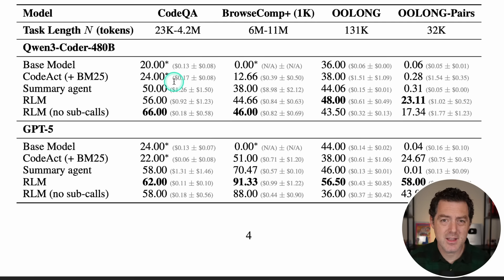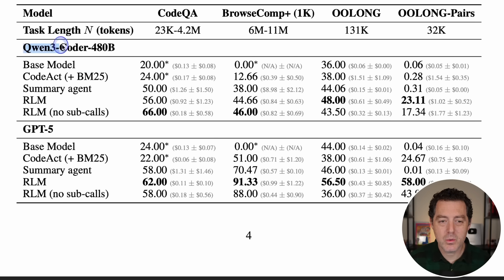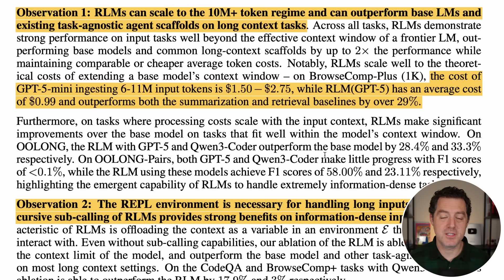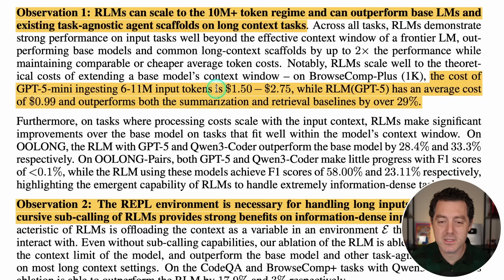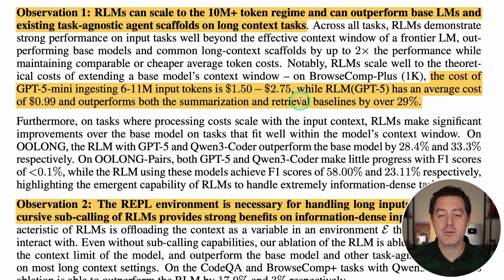Looking at the results — needle in the haystack was left off because it's basically solved. On CodeQA, BrowseComp, Oolong, and Oolong Pairs, RLM — even RLM with no subcalls — did way better than other methods. Observation one: RLMs can scale to the 10 million+ token regime and outperform base models and existing agent scaffolds on long context tasks. The cost of GPT-5 Mini ingesting 6 to 11 million input tokens is $1.50 to $2.75, while RLM GPT-5 has an average cost of 99 cents and outperforms both summarization and retrieval baselines by over 29%. Cheaper and better.